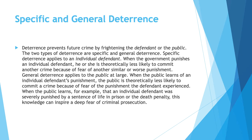Deterrence prevents future crime by frightening the defendant or the public. The two types of deterrence are specific and general. Specific deterrence applies to an individual defendant — when the government punishes an individual defendant, he or she is theoretically less likely to commit another crime because of fear of a similar or worse punishment.